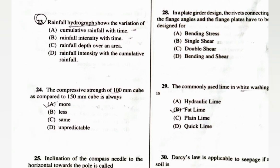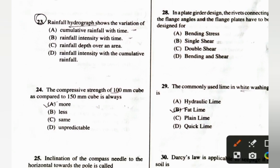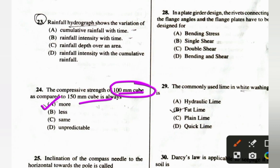The compressive strength of a 100 mm cube is always greater than that of a 150 mm cube. Similarly, cube strength of concrete is greater than cylindrical strength of concrete.